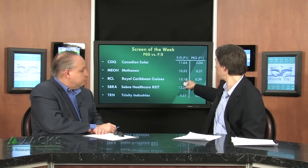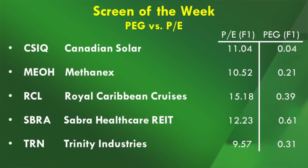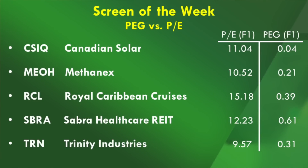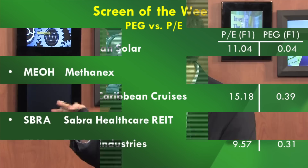Let's look at a couple of them — you'll also see the P/E ratio and the PEG ratio listed next to each. Anyone looking for stocks that have good growth rates but also qualify as classic value stocks, this would be it. Canadian Solar has a P/E of 11.04 and a tiny PEG ratio using F1 — that's because Canadian Solar has a 300% growth rate. I like using F1 because if you're using F1 on your PE, why not use it on your PEG? Then you've got Methanex, Royal Caribbean, Sabra Health, and Trinity Industries — all of these look fantastic on both valuation metrics.